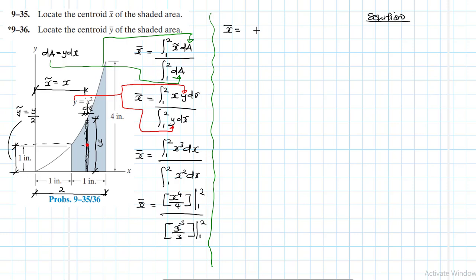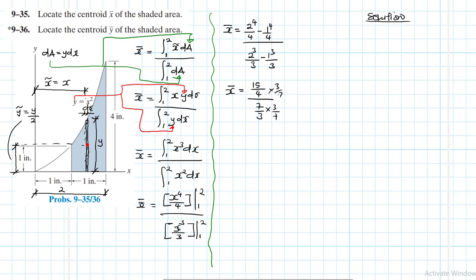Substituting the limits: the numerator is 2⁴/4 − 1⁴/4 = 16/4 − 1/4 = 15/4. The denominator is 2³/3 − 1³/3 = 8/3 − 1/3 = 7/3. So x-bar = (15/4) ÷ (7/3) = (15/4) × (3/7) = 45/28. That is our x-bar.